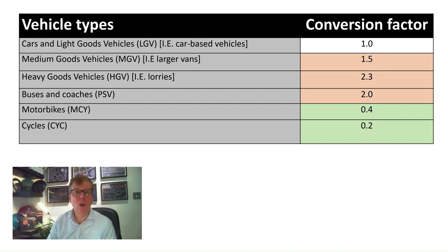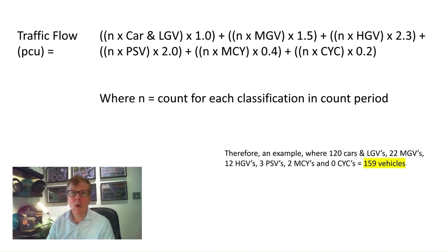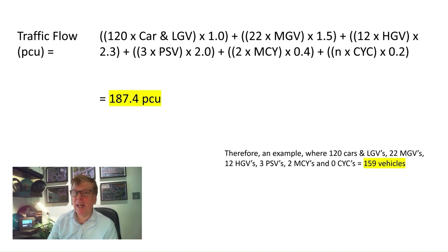We can see that vans, trucks and buses are multiplied to account for their larger sizes, whilst the smaller sizes of motorbikes and cycles are also accounted for. Traffic flow is normally expressed in PCUs per hour. In this example, we have 120 cars, 22 vans, 12 HGVs, 3 buses and 2 motorcycles — totalling 159 vehicles, but this results in 187.4 PCUs. There is quite a big difference between the vehicle count and the actual PCUs.